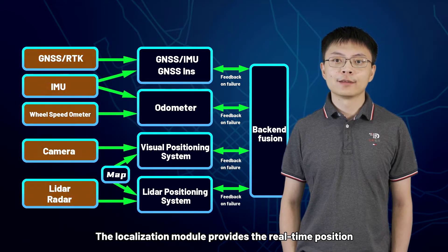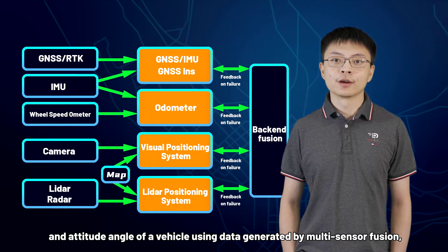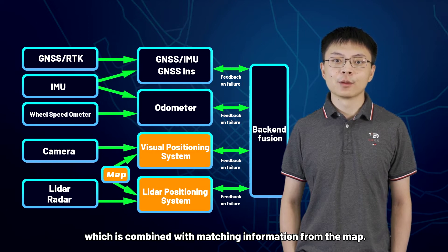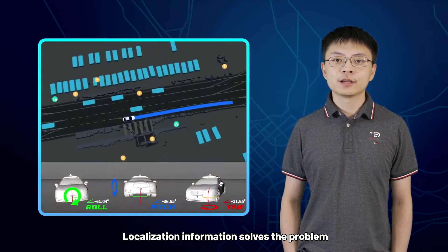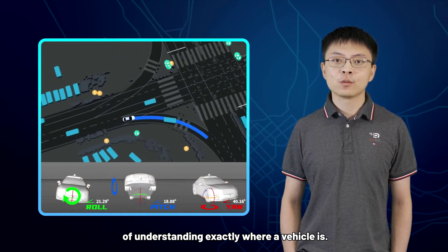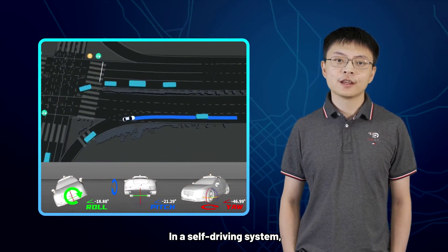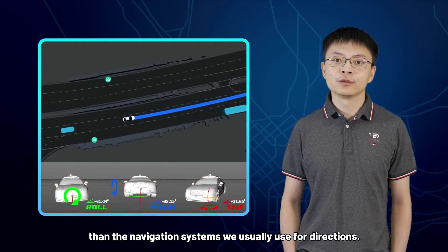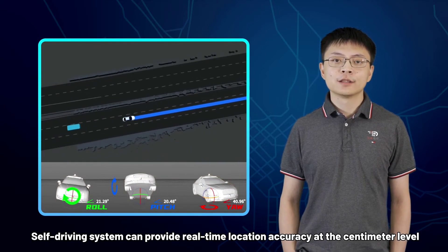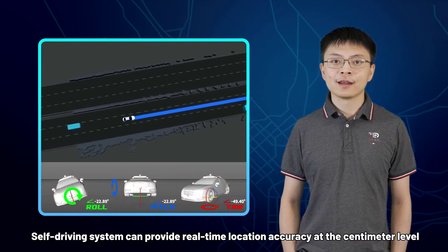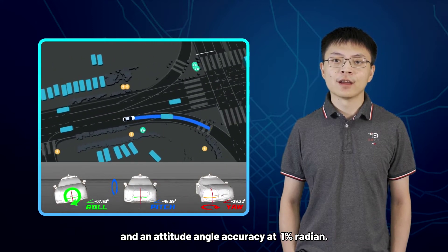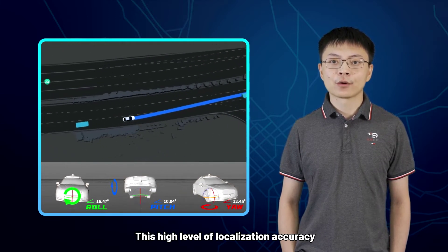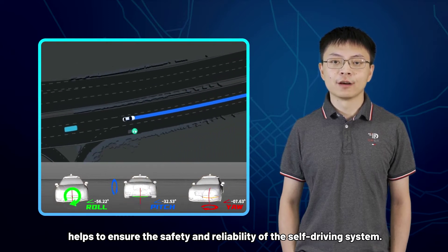The localization module provides the real-time position and attitude angle of a vehicle using data generated by multi-sensor fusion, combined with matching information from the map. Localization information solves the problem of understanding exactly where a vehicle is. In a self-driving system, the localization accuracy has to be much higher than the navigation systems we usually use for directions. Self-driving systems can provide real-time location accuracy at the centimeter level and attitude angle accuracy at 1% radian.